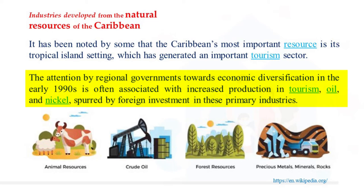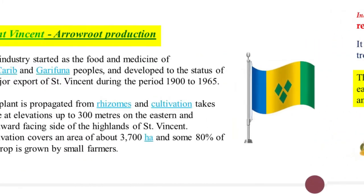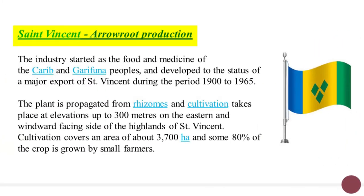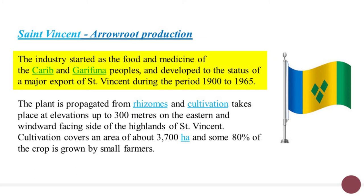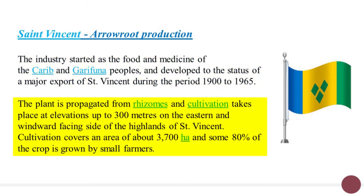St. Vincent is known for its arrowroot production. The industry started as a food and medicine of the Carib and Garifuna peoples and developed to the status of a major export of St. Vincent during the period of the 1900s to 1965. The plant is propagated from rhizomes and cultivation takes place at elevations of up to 300 meters on the eastern and windward-facing side of the highlands of St. Vincent. Cultivation covers an area of about 3,700 hectares and some 80% of the crop is grown by small farmers.